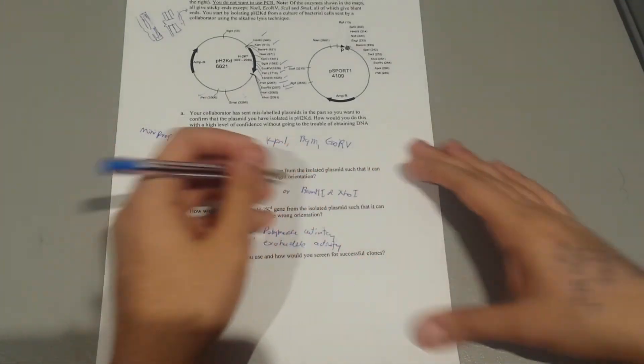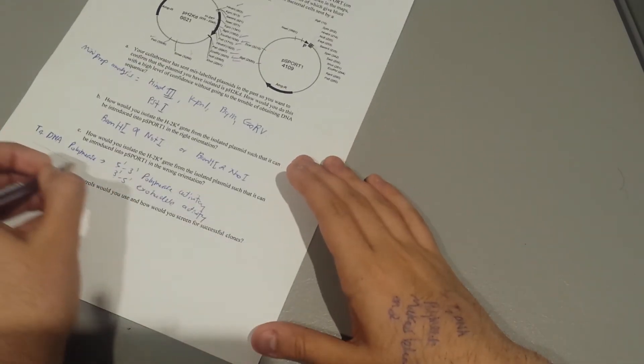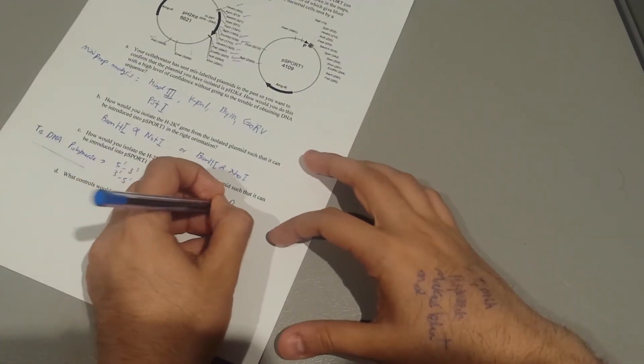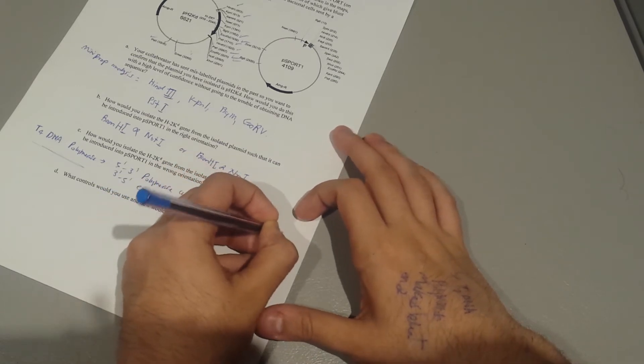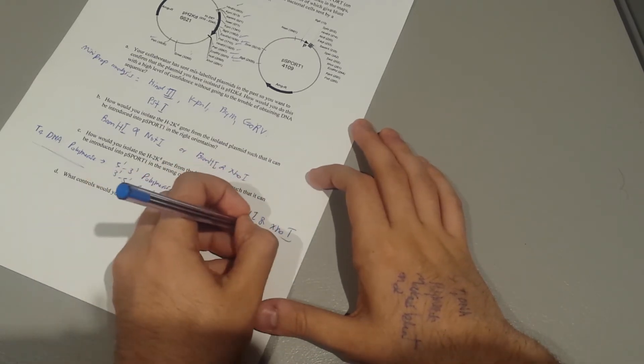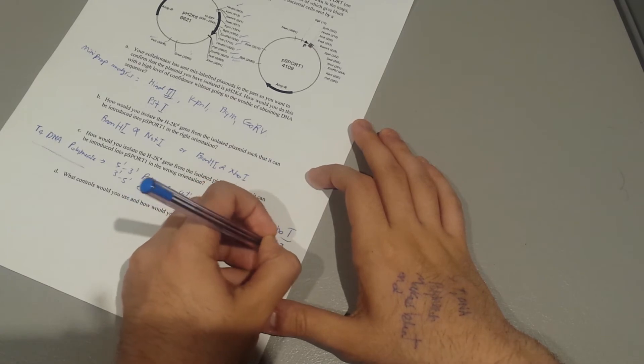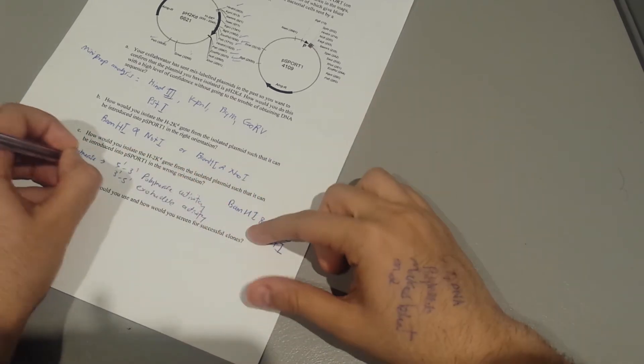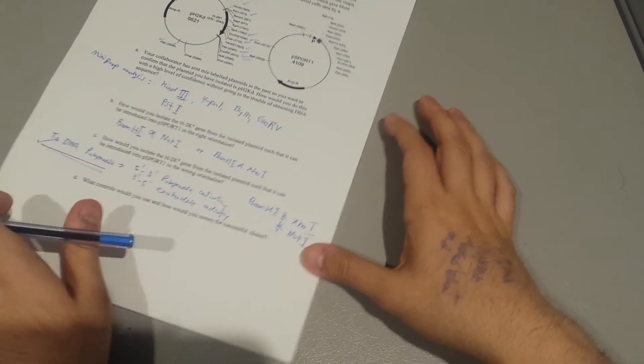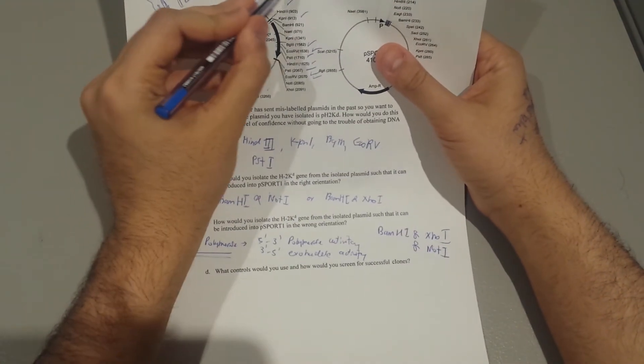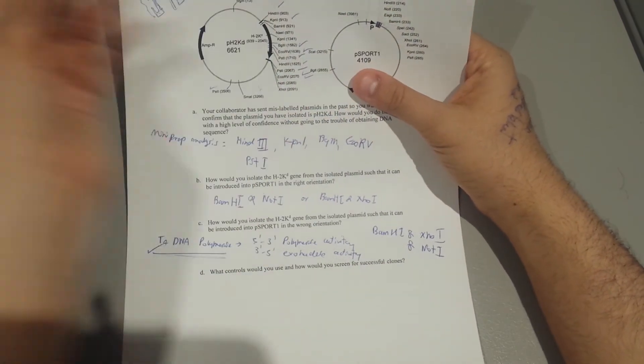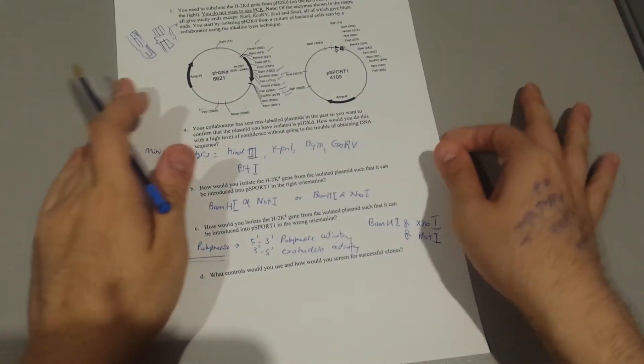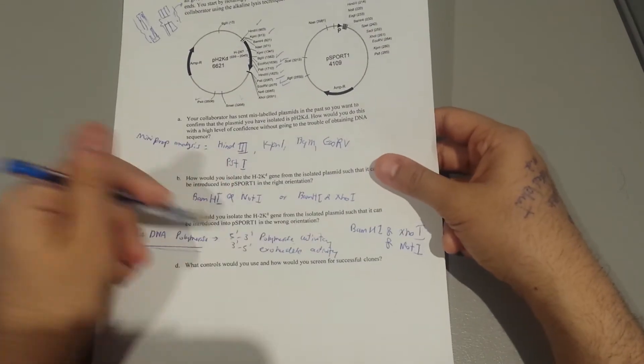So you can still use the same enzymes, I'm going to say using T4 DNA polymerase, so I'm going to say BamHI and XhoI with T4. Make sure you specify that. But still, you can find if there is a site with those four blunt end enzymes and use those as well.